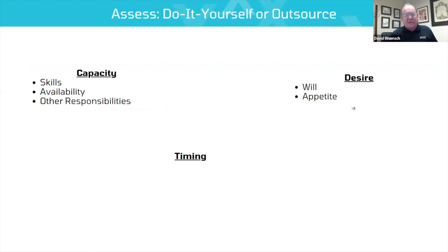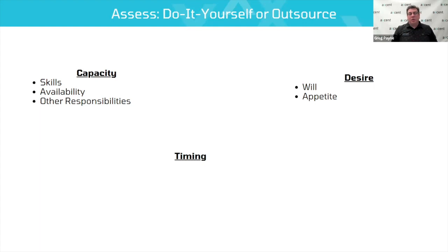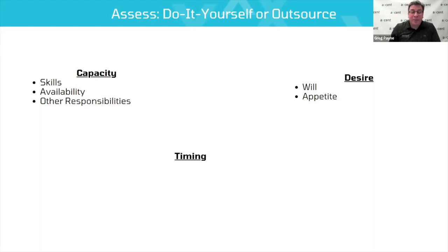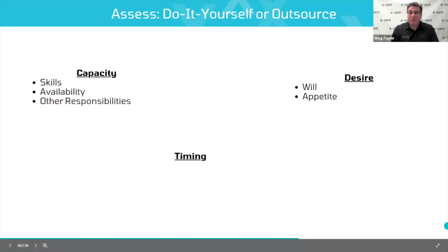The next part has to do with assessing your do-it-yourself options. You know you have a problem — the next question is what do you do about it? Our encouragement is to make this the year you do something. Some of this you can do yourself; no one knows your network and your business better than you do. Key questions: What capacity do you have to take on a data integrity project? Do you have the skills in house? Do the folks with the skills have availability, or are they tied down with other responsibilities? You can't stop the business to do these projects, and they are messy.